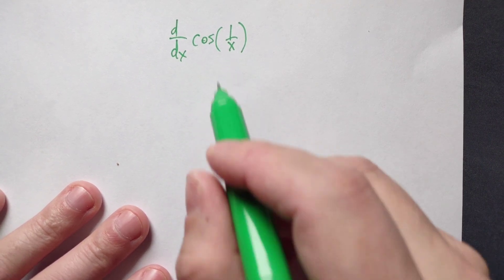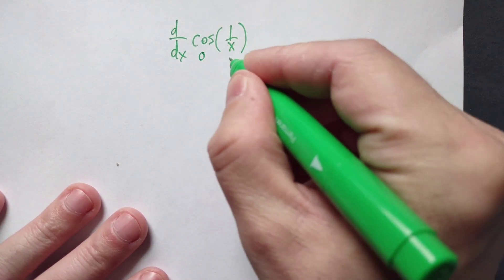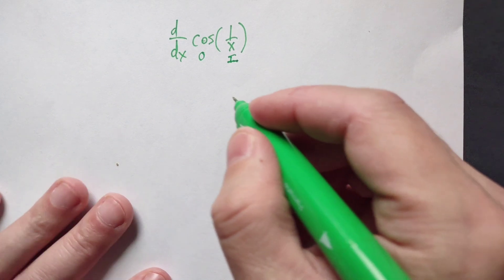Let's differentiate with respect to x cosine of 1 over x. So this is our outside function, this is our inside function. We have to use the chain rule for that reason.